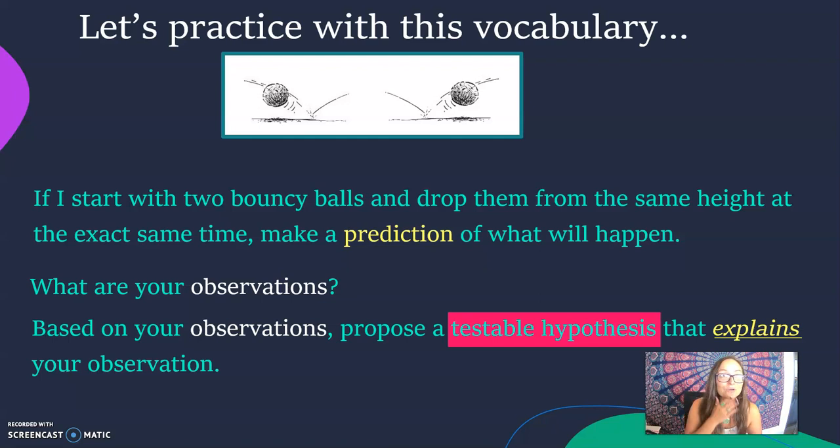So now you are proposing in your mind some kind of explanation, a reason why the one ball did not bounce. That is your hypothesis. It is an explanation that you can test. So you are developing a testable hypothesis to explain your observations.